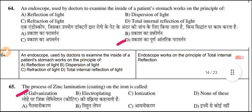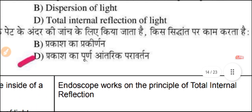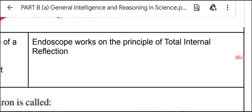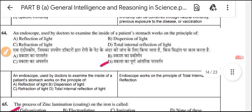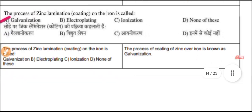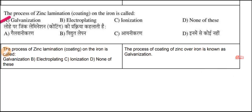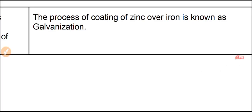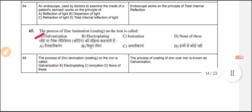Question 64: An endoscope used by doctors to examine the inside of a patient's stomach works on the principle of total internal reflection of light. Question 65: The process of zinc coating on iron is called galvanization — coating iron with a zinc cover is called galvanization.